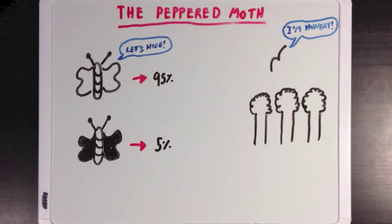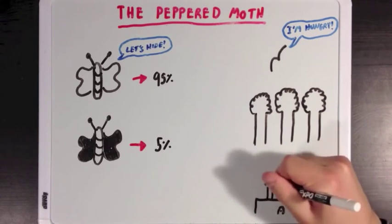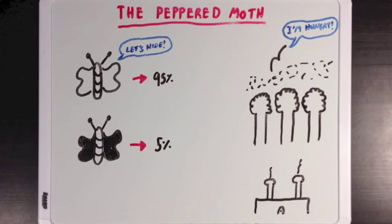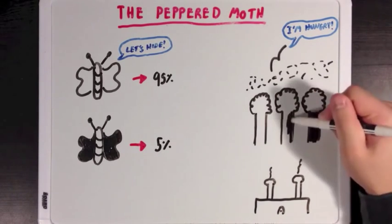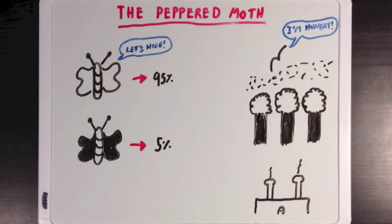However, a few years later the industrial revolution happened. Factories started to get built in the area and they would release huge amounts of soot into the air. And this soot started collecting on trees and dyed them black. Now, because of the change, white moths couldn't camouflage themselves anymore. And birds ate a huge chunk of the peppered moth since they couldn't avoid their predators.